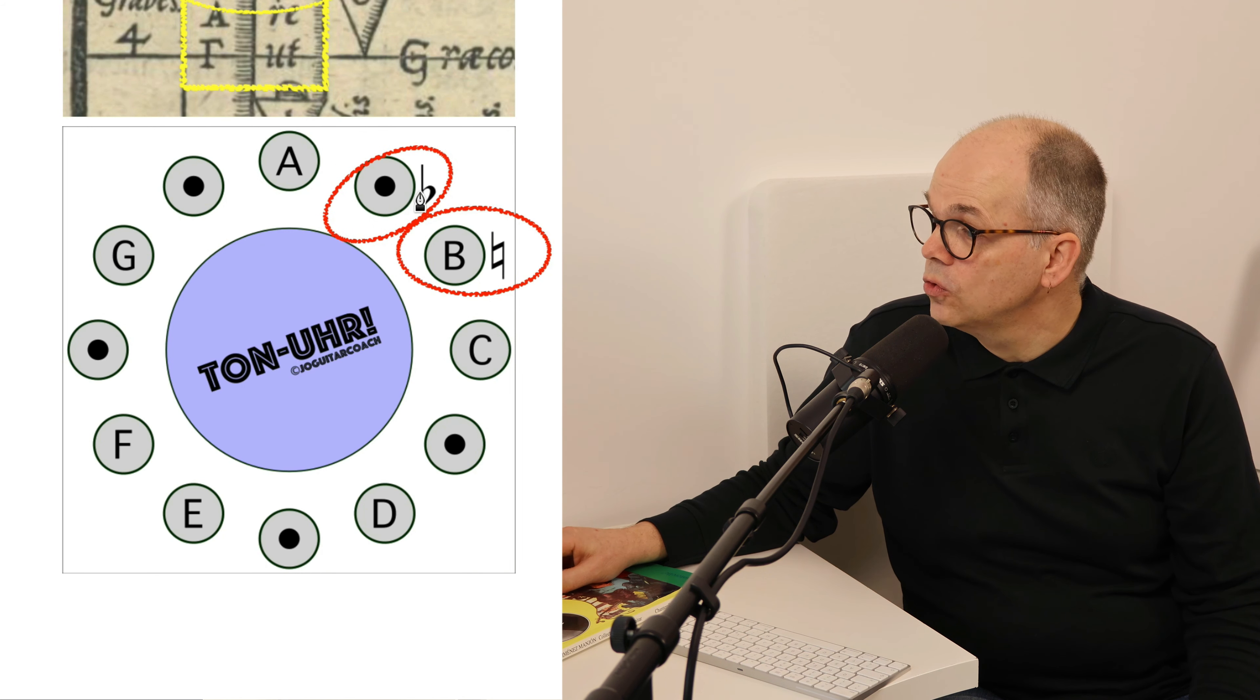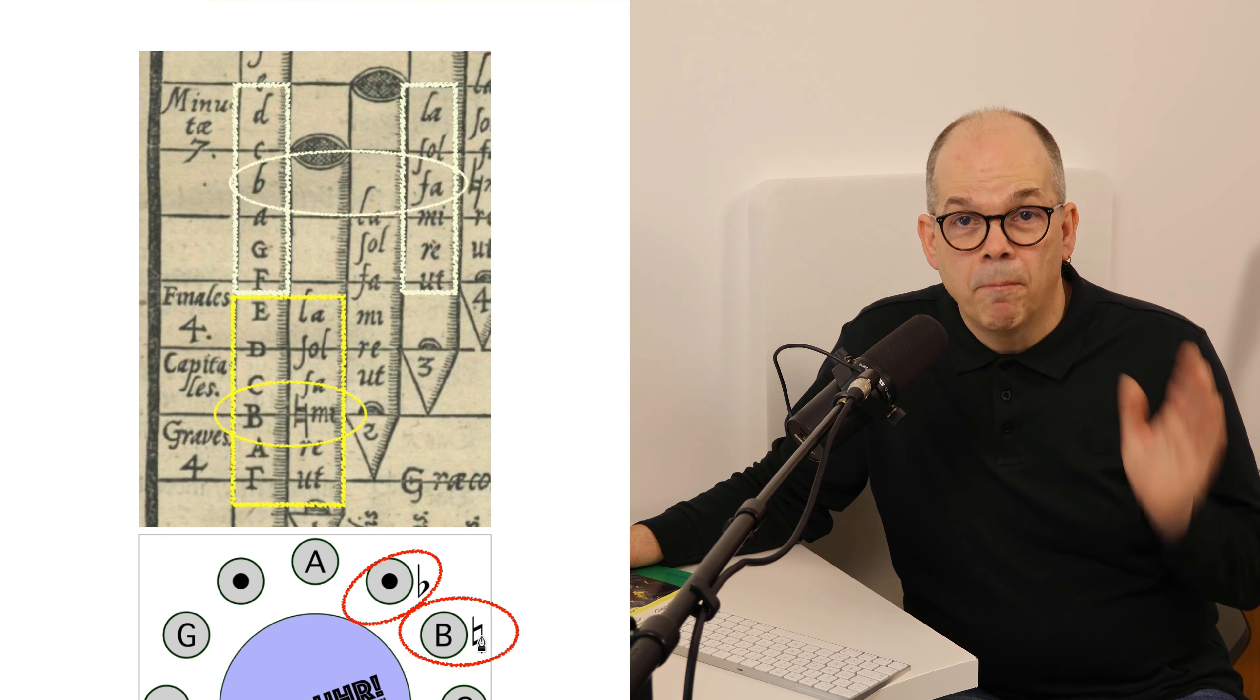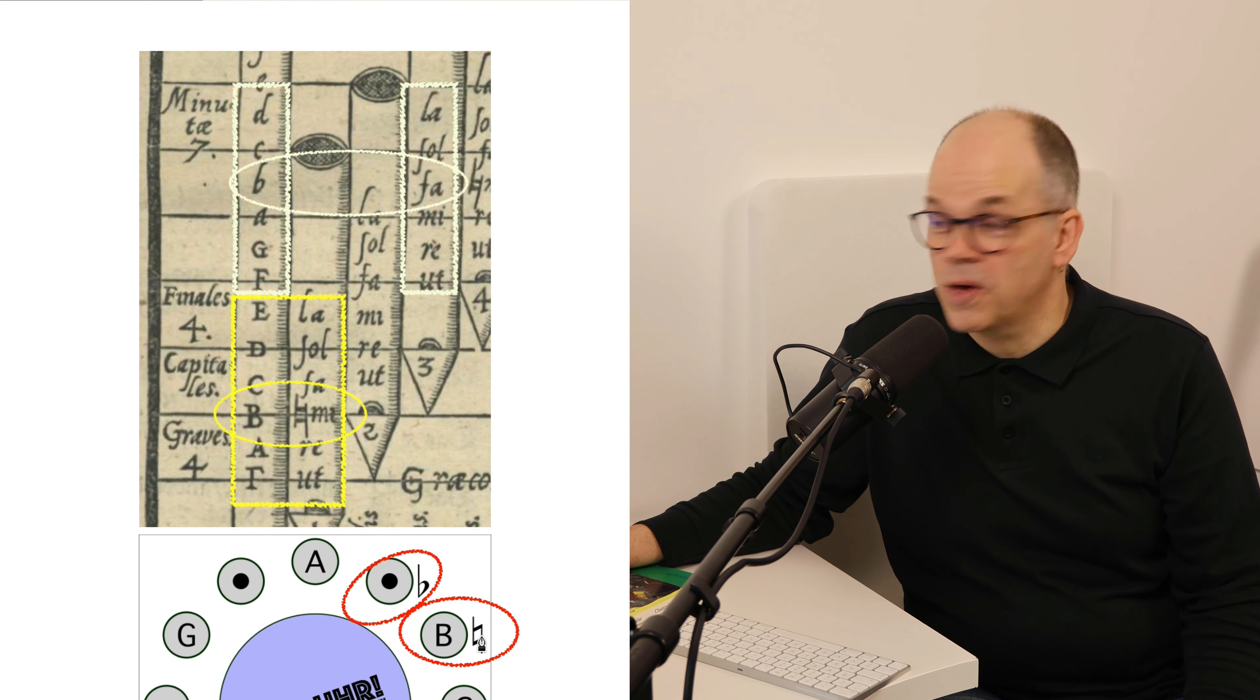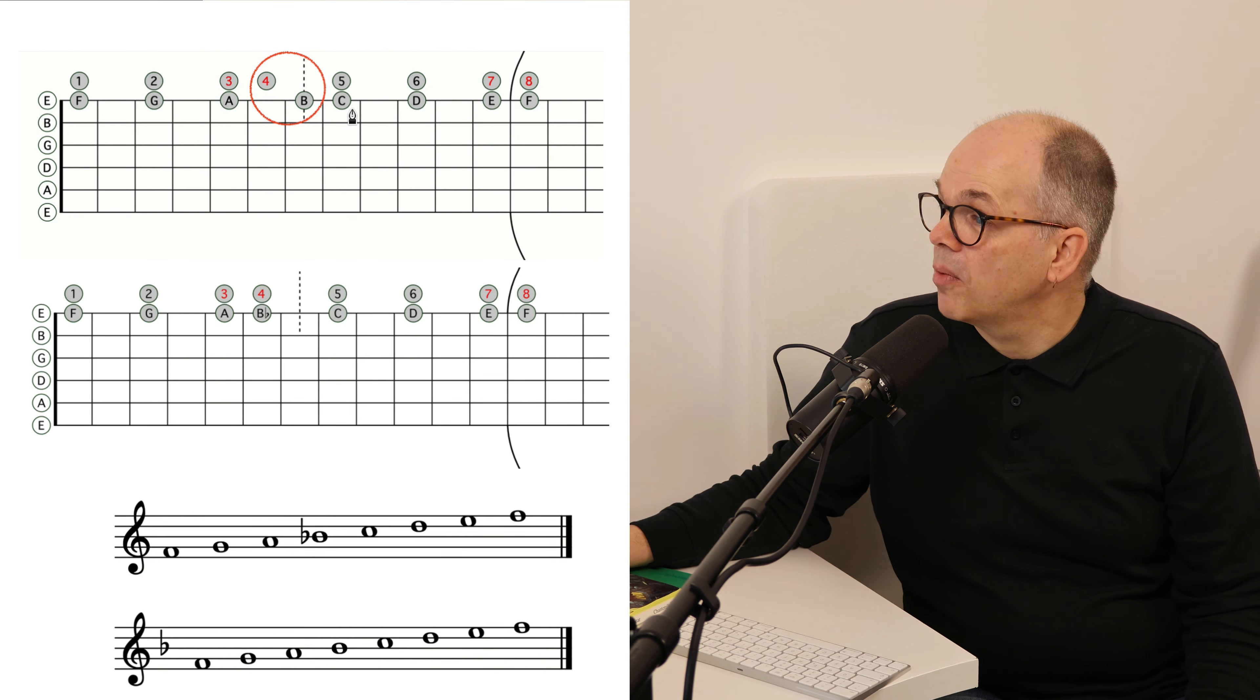also said rotundum and quadratum, so round and squared. In our F major scale we actually use the B molle, the round one.